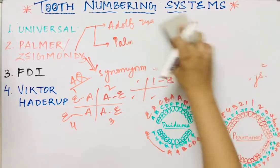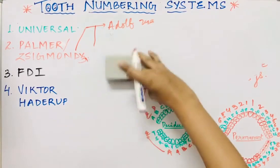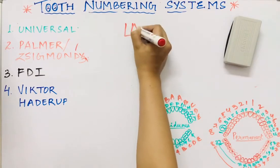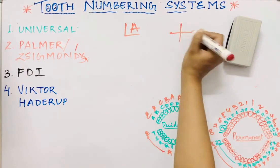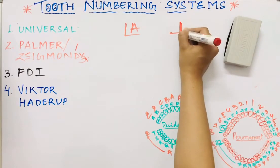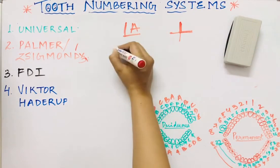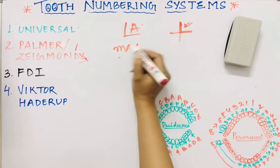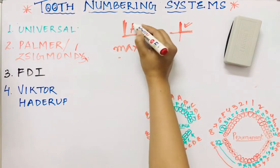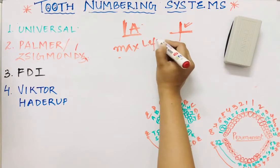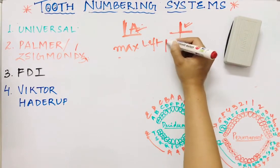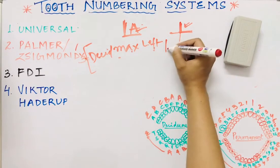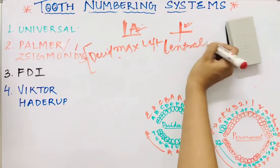To identify which specific tooth is meant, line angles or block symbols are used. For example, if 'A' is written with a line above and to the left, the line above means maxillary (upper), written on the left side means left side, and since it is A it is deciduous — so it is the deciduous maxillary left central incisor.